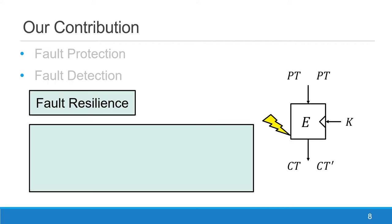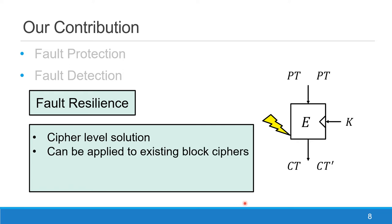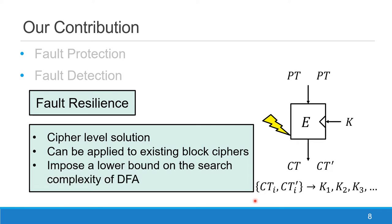Our main contribution is to propose a fault-resilient method. The first thing is to propose a cipher-level solution, so we do not have to rely on an engineering solution, and it can be applied to existing block ciphers to protect against DFA. The high-level idea is to impose a lower bound on the search complexity of the DFA. We do let the adversary inject the fault and receive whatever ciphertext they want, but even with the set of ciphertexts, they are going to have multiple key candidates. Our main work is to give a lower bound on this key candidate space.